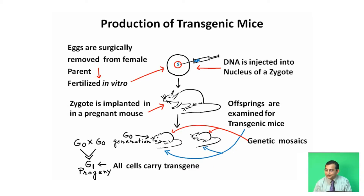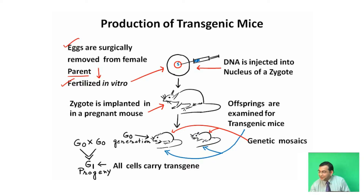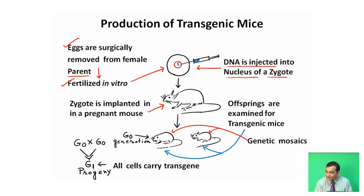Eggs are surgically removed from the female parent — this is the first step. Then the eggs are fertilized in vitro. Then DNA is injected into the nucleus of the zygote. Then the zygote is implanted in a pregnant mouse.